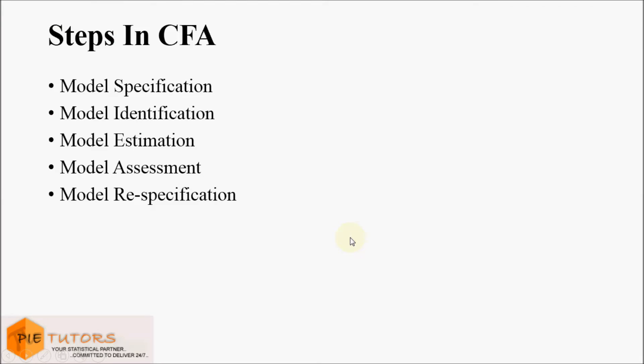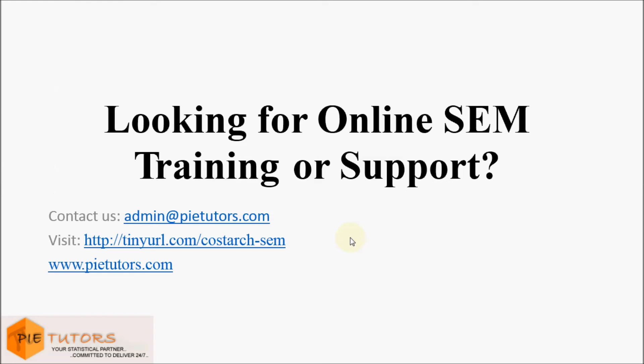In this lecture I have explained how to run a basic confirmatory factor model using five steps: model specification, model identification, model estimation, model assessment, and model re-specification. In the next lecture we will look at another confirmatory factor analysis example to understand the concept in more detail. If you are looking for online SEM training or support, please contact us at admin@pytutors.com.